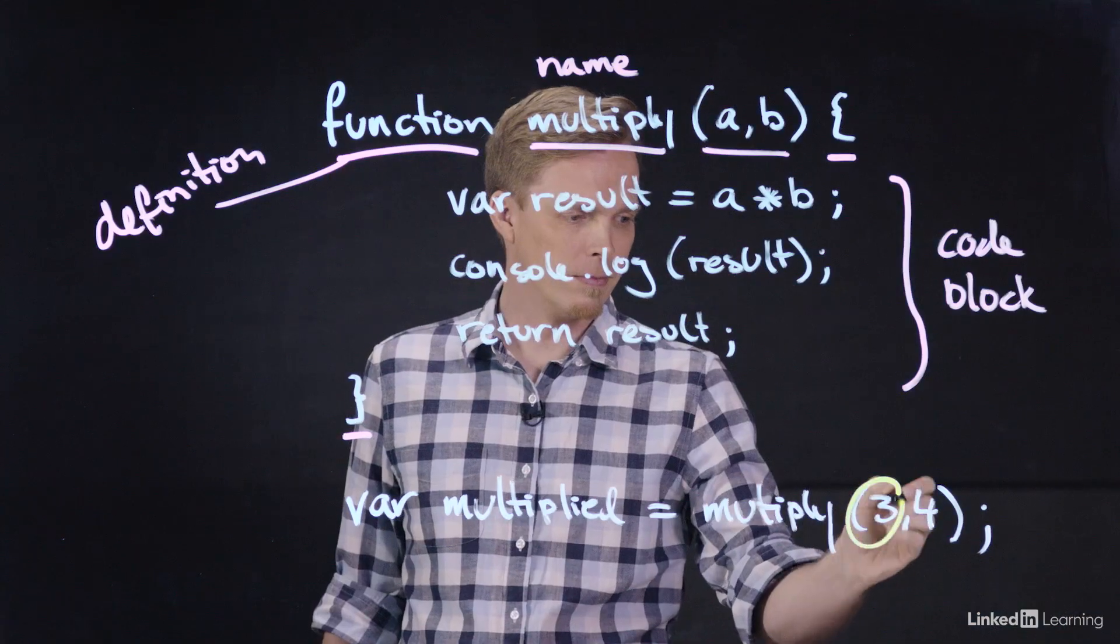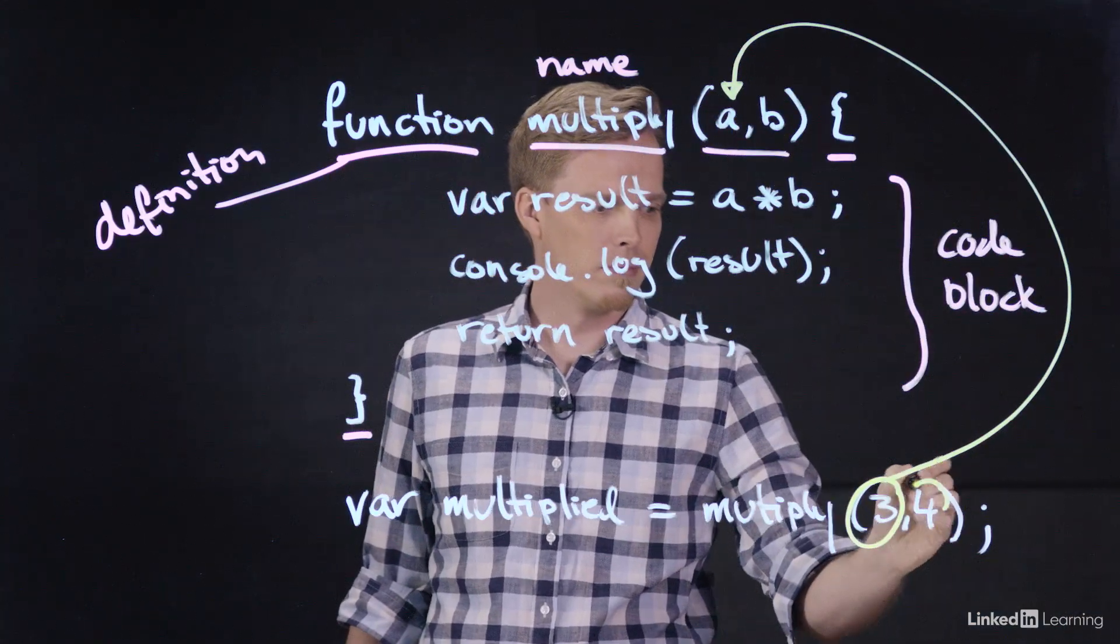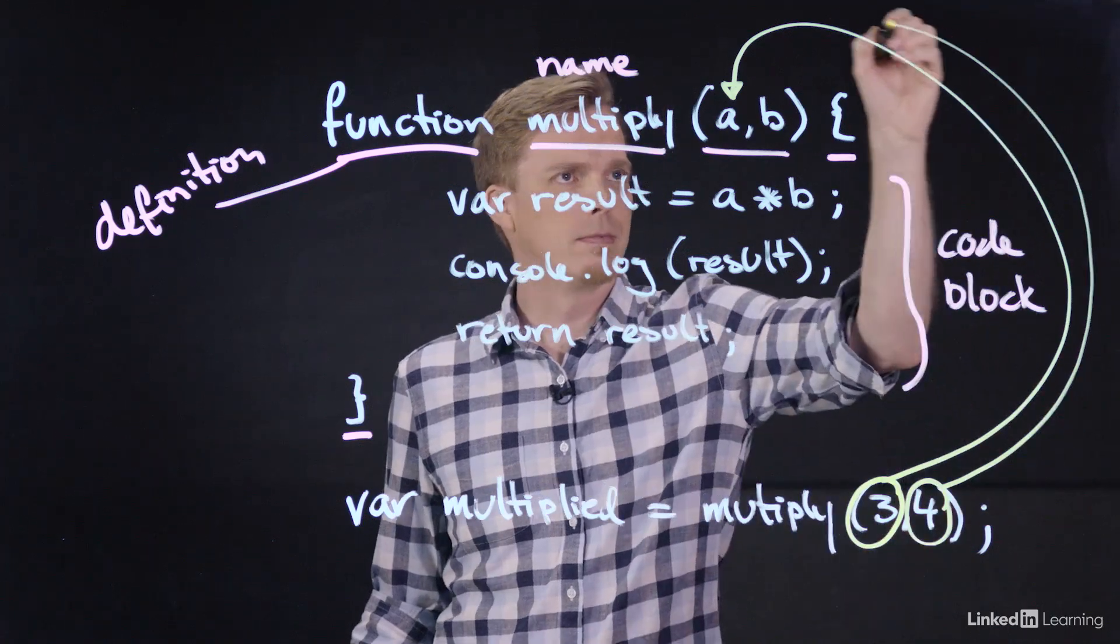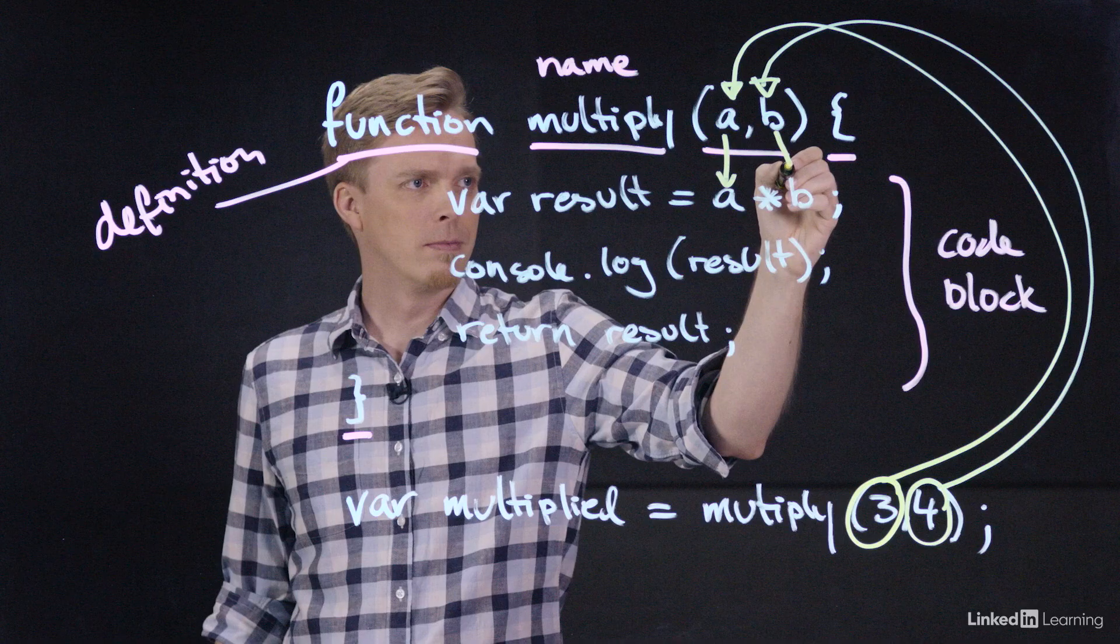Every function comes with an arguments object, an array of possible arguments you can pass to the function when you call it. These arguments are separated by commas and can be used inside the function itself based on their names in the function declaration.